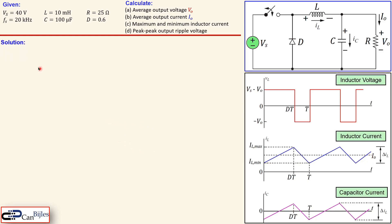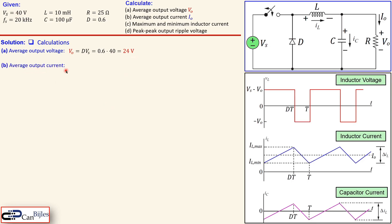Now let's move on with the calculations. The average output voltage, or DC output voltage, is given by the expression: output voltage equals duty cycle times the input DC voltage. In this case we get 24 volts. The average output current is given by Ohm's law — since we know the output voltage, it is simply 24 over 25, which gives 960 milliamps.